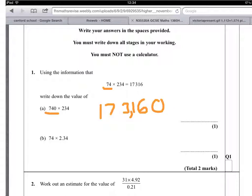Next question, 74 times 2.34. Well, this time we've made it smaller by two decimal places. So we have to take account of that in the answer. We look at 17,316.